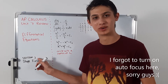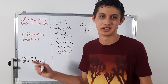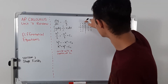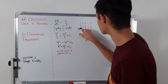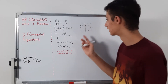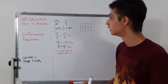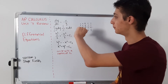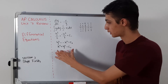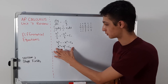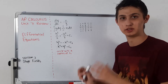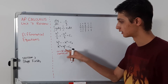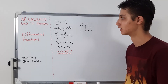Now let's talk about slope fields — section two. You might see this weird grid thing here; that's what a slope field looks like. I have the differential equation dy over dx equals negative x over y. If you work through it, you end up with x squared plus y squared equals c squared — so it's a circle with radius c.